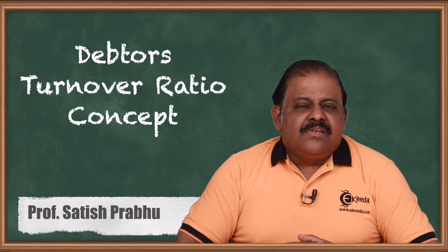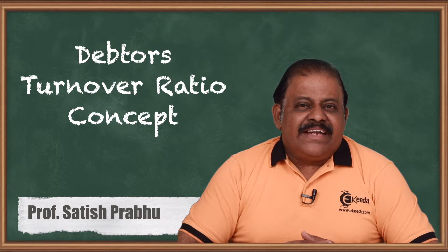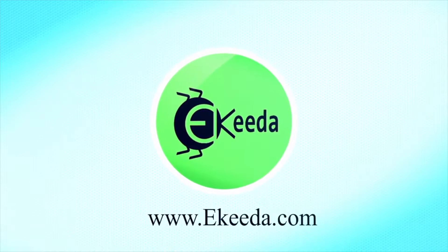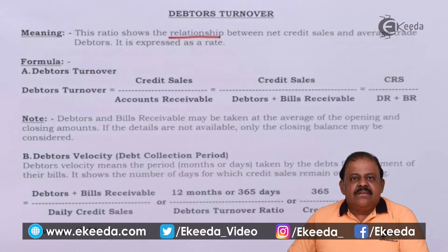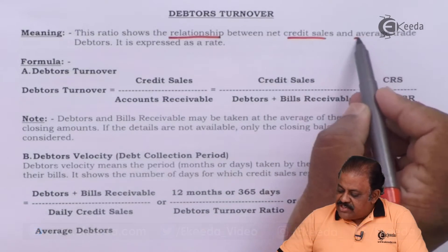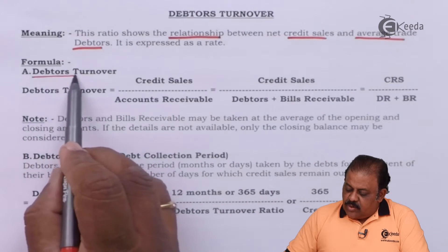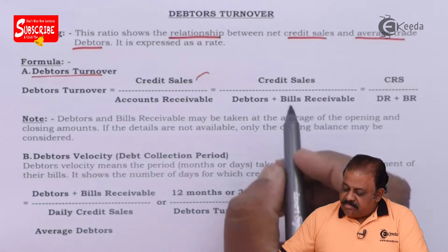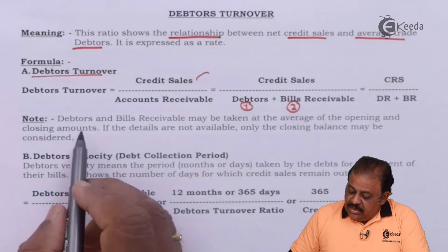So debtors turnover ratio is a very important ratio for any company to manage its receivables. Let us understand how it is calculated, what are its components, and how it has to be interpreted. This ratio shows the relationship between credit sales and average debtors. Debtors turnover ratio is equal to credit sales divided by accounts receivables, which consists of debtors and bills receivables.